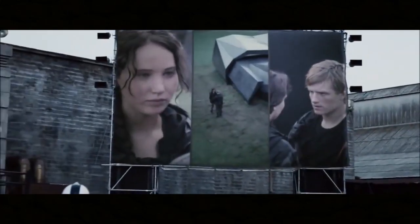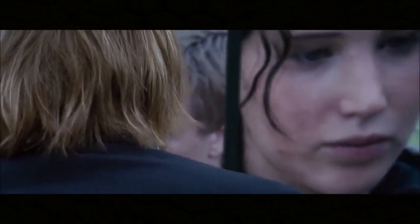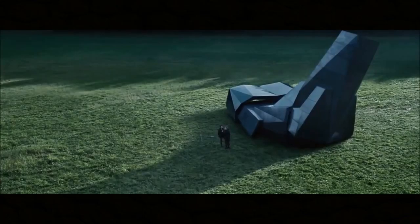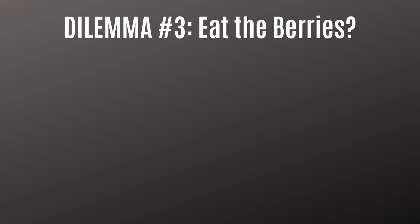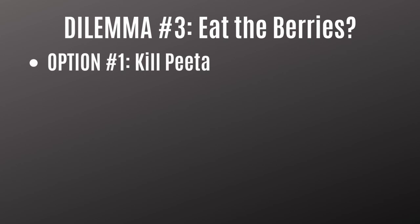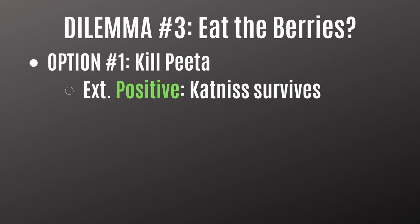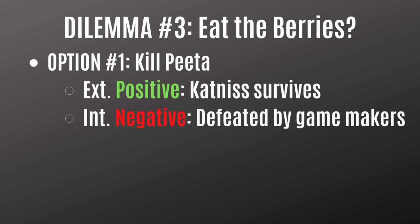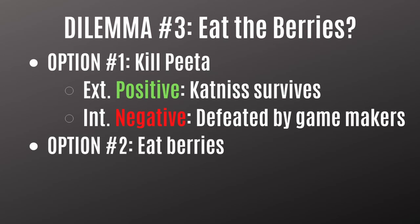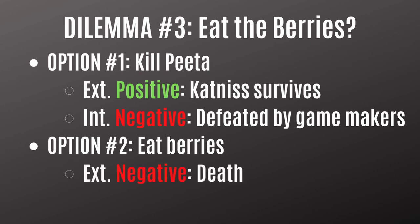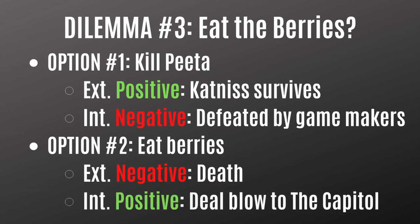Here's one more example from the Hunger Games — the berry scene at the climax. Katniss and Peeta are the last two standing when the game makers announce there can only be one winner, so one of them has to die. Katniss has two choices. Option one: kill Peeta. The external outcome is positive because Katniss would survive, return home a winner, and take care of her sister and mom. The internal outcome is negative because she'd have to live with killing her friend and bowing to the game makers. Option two: eat the berries with Peeta — essentially a double suicide. The external outcome is negative because they'd both die. But the internal outcome is positive because they'd die knowing they dealt a blow to the Capitol that they hate so much.